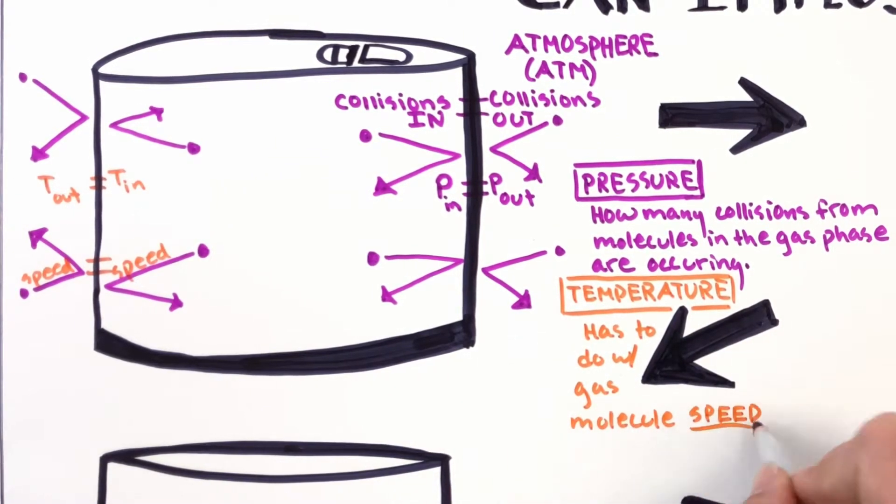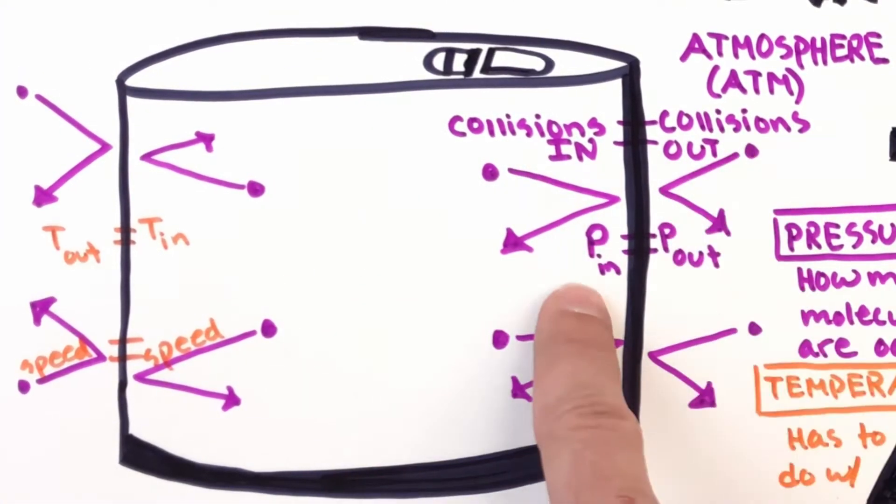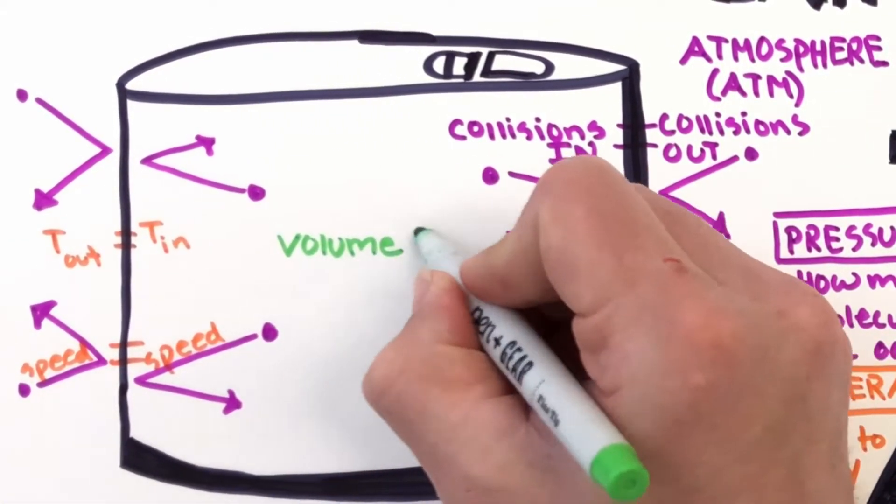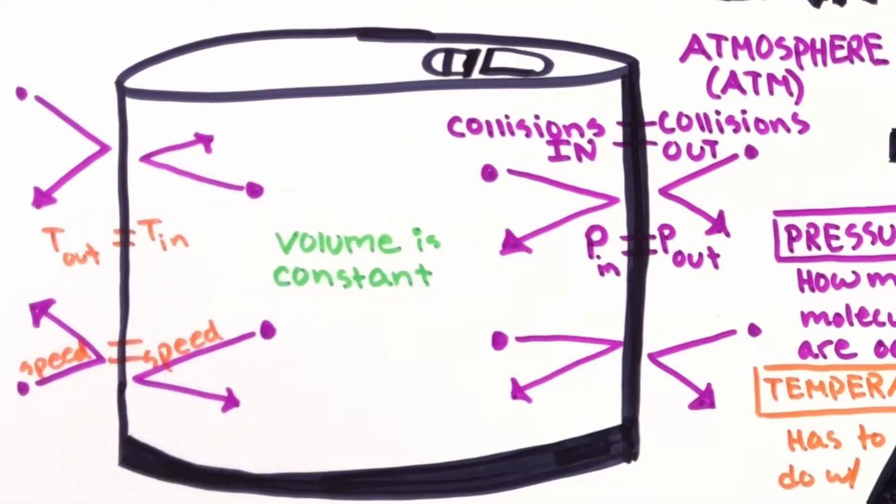So if collisions are the same, pressure's the same, speed's the same, temperature's the same, what's going on with our volume? The volume is constant. It's unchanging. You open up a can, it doesn't change volume on the counter.